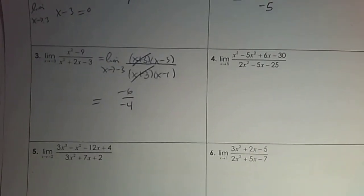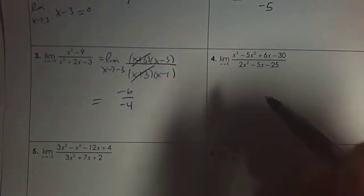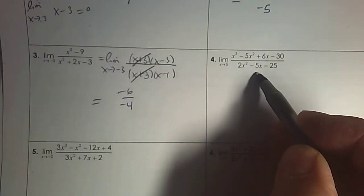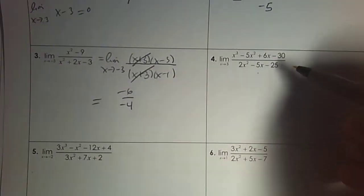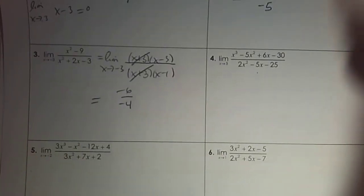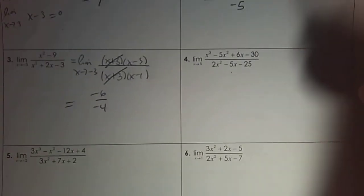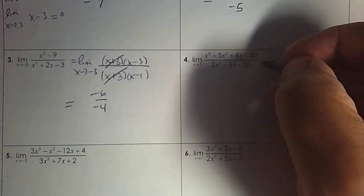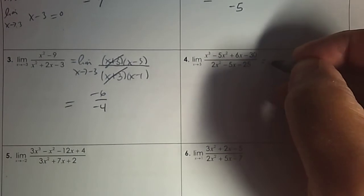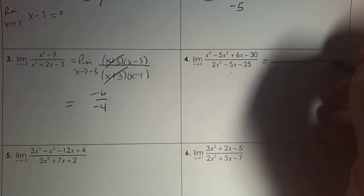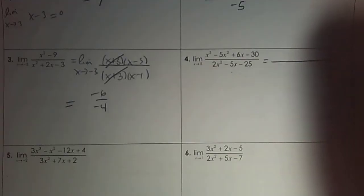Number 4. If you plug in 5, that is 0 over 0, so there's some real good factoring going on here. It's good practice to factor this. The numerator, we're going to factor and practice by grouping.